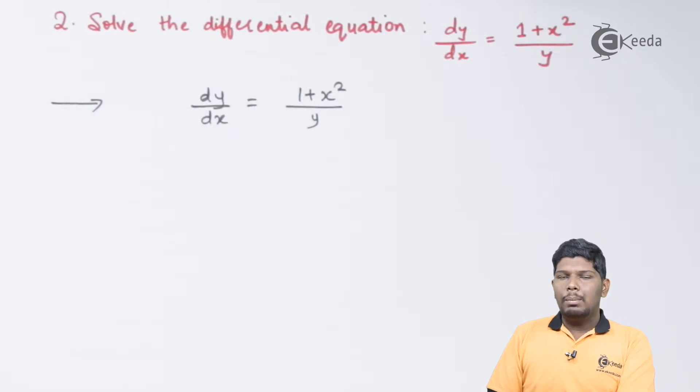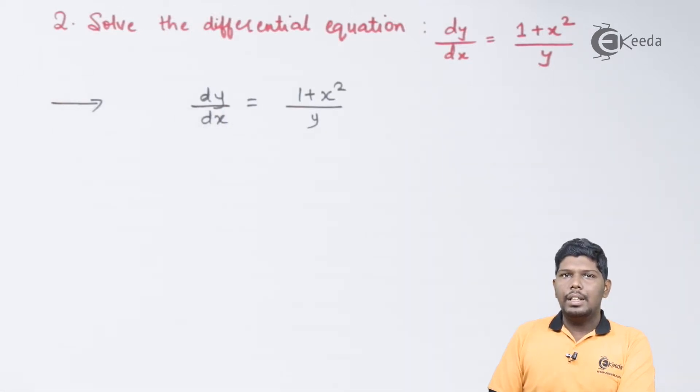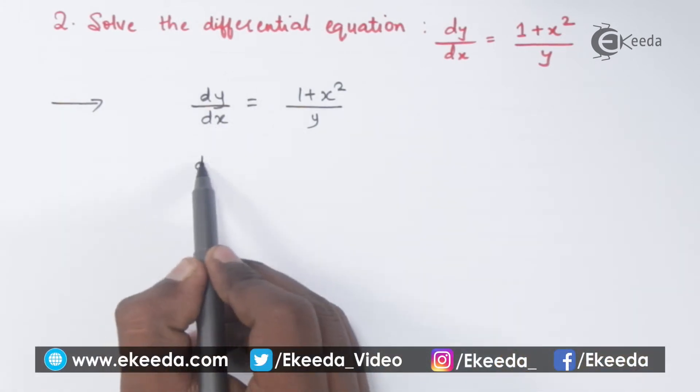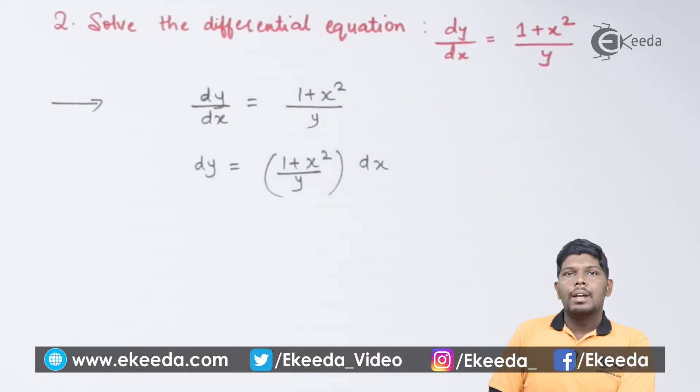Before separating the variable, first you should make sure that both dy and dx are present in the numerator. Here you can see dx is present in the denominator, so let us transfer dx on the right hand side.